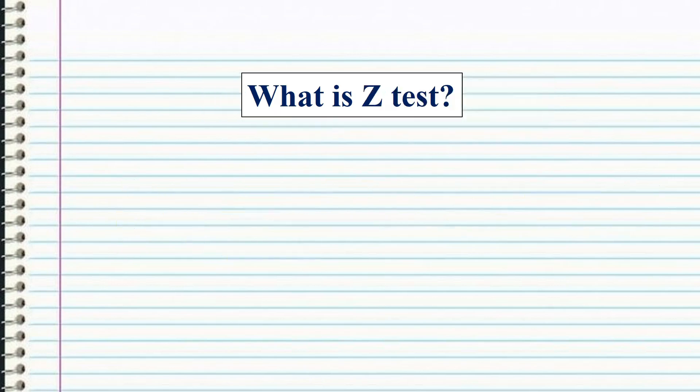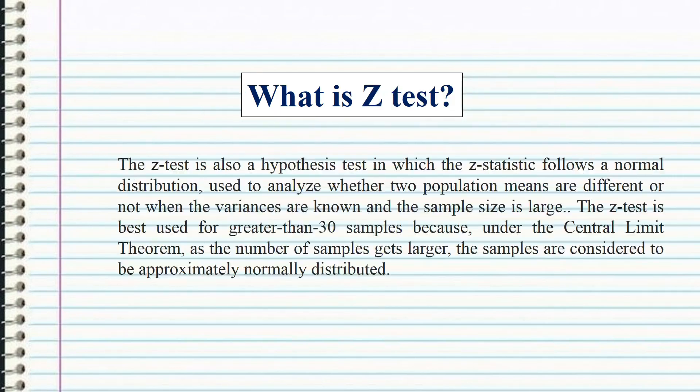The z-test is a hypothesis test in which the z-statistic follows a normal distribution. It is used to analyze whether two population means are different, when the variances are known and the sample size is large. The z-test is best used for samples greater than 30, because of the central limit theorem.